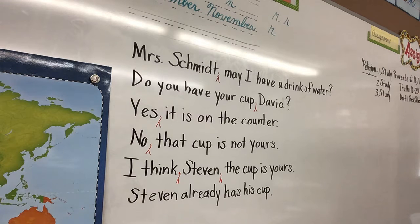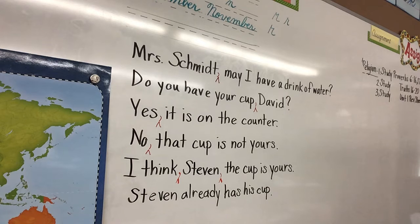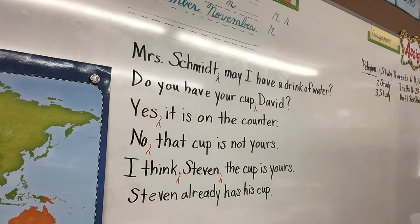Number one says: Mrs. Perry, look at my new notebook. So what do we do first? Comma after Mrs. Perry — you're talking to Mrs. Perry. What kind of sentence? Don't forget to insert — put that little insert part and the comma above it. Don't make your commas too big. What ending punctuation does it have? Period.